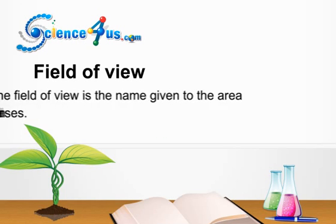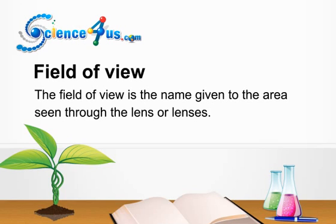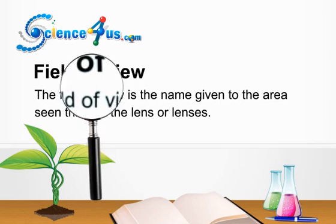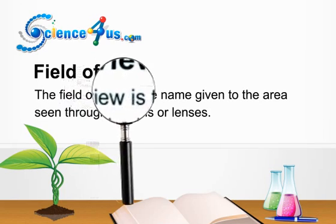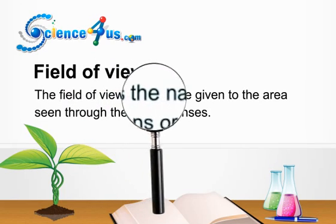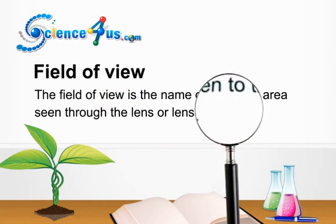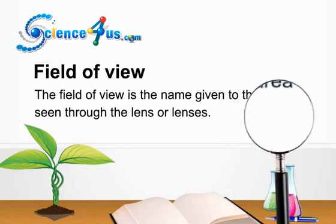The field of view is the name given to the area seen through the lens or lenses. In non-fiction books and textbooks, a magnified view is illustrated within a circle designating the field of view and alerting the reader to the fact that this is an enlarged image seen through some type of magnifier.